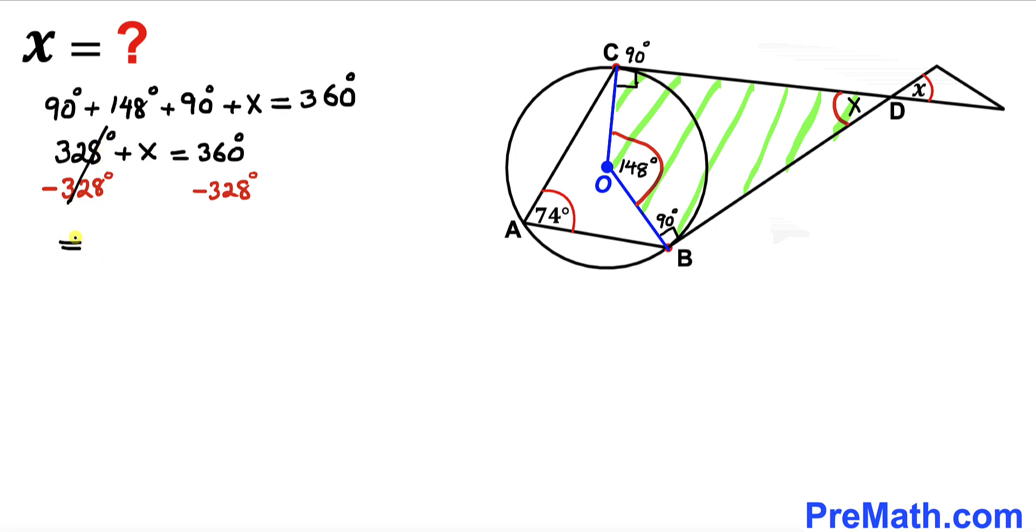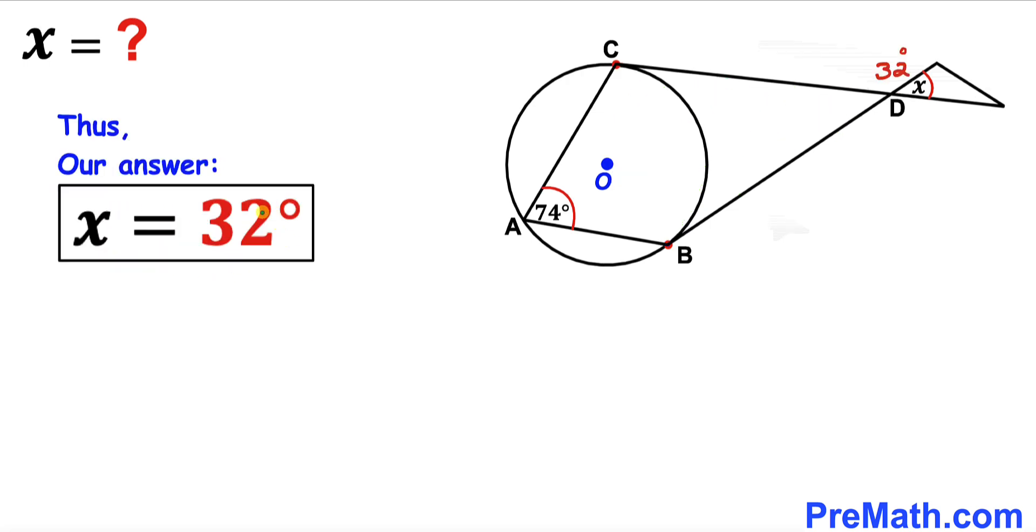So therefore our angle x is going to be equal to 32 degrees. So therefore our angle x turns out to be 32 degrees and that's our final answer. Thanks for watching and please don't forget to subscribe to my channel for more exciting videos.